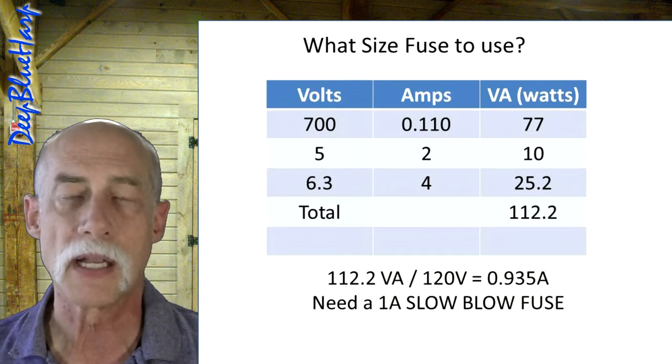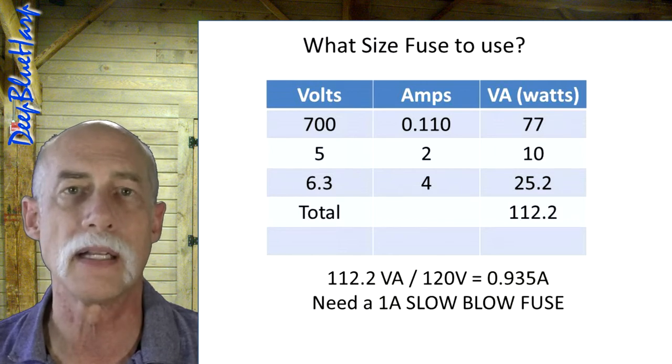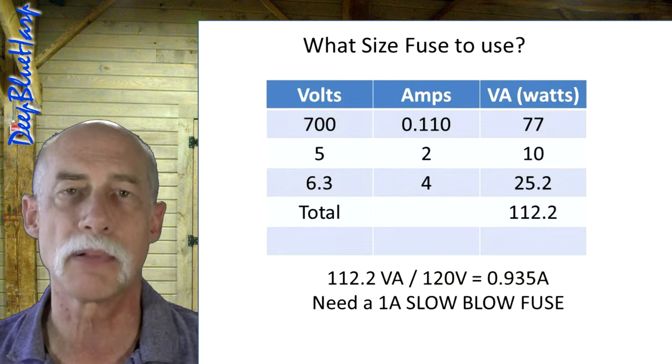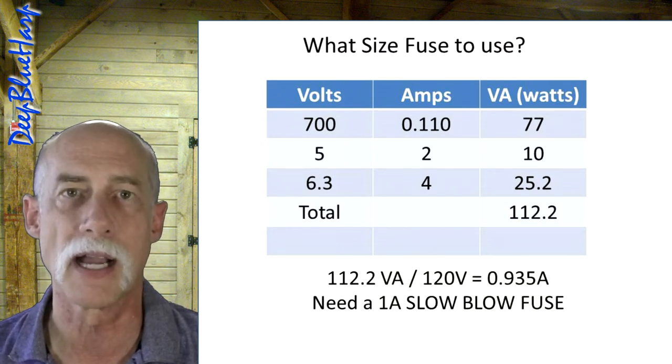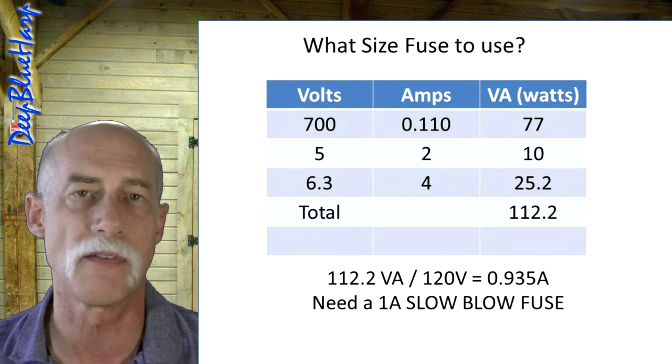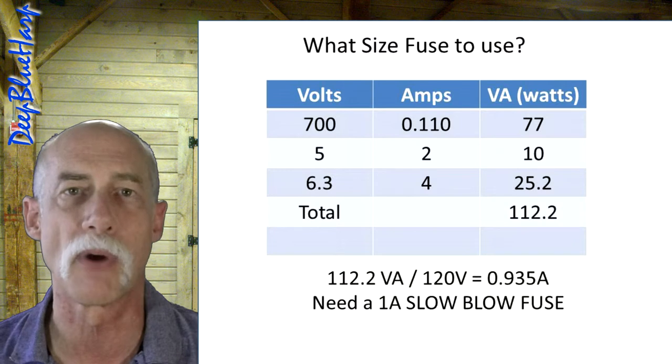What that means is we cannot connect the 5V center tap for the 5V winding to ground. Because, as you'll notice in the schematic, the B plus pin 8, the red line, connects to the yellow line, which goes to one half of the winding for the 5V winding, and then the center tap will send it right to ground.